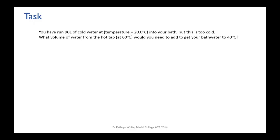Your task for this video is a thinking problem you can solve using the same calculations. You've run 90 liters of cold water at 20 degrees Celsius into your bath but it's too cold. What volume of water from the hot tap at 60 degrees Celsius do you need to add to reach 40 degrees Celsius? Don't worry too much about sig figs here. There is a quicker way to solve this rather than going through the full calculation — but if it doesn't leap out at you, work through it the same way we just did, then see if you can spot the shortcut.